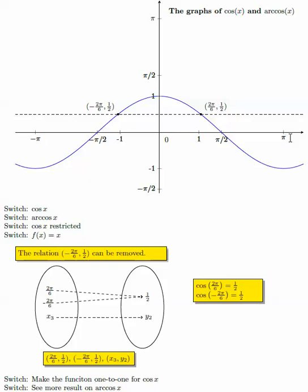We know from negative pi to positive pi is one period of cosine x. When x equals 0, we have cosine x equals 1. So cosine x starts from 1, goes to 0 at x equals pi over 2, and then negative 1 at x equals pi.